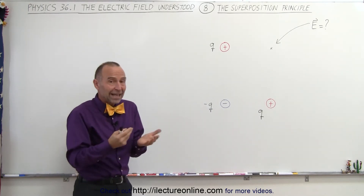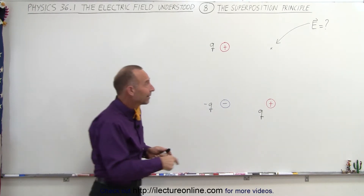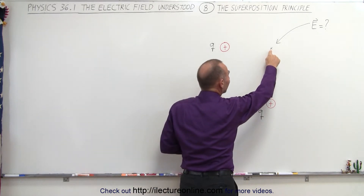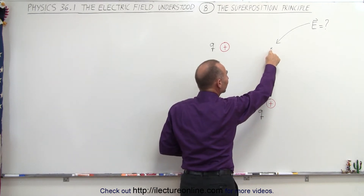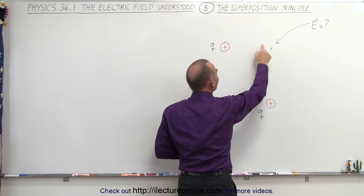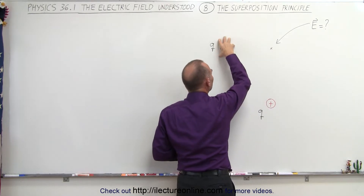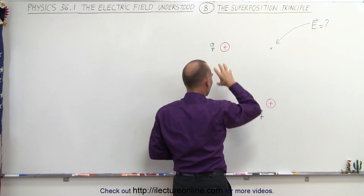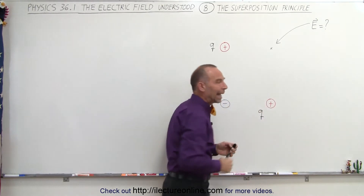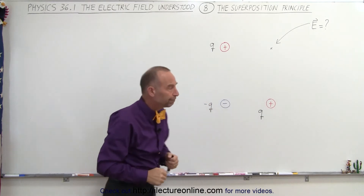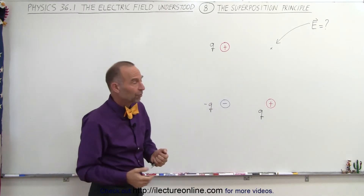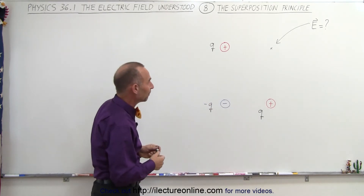The superposition principle states that the electric field at this location is simply a vector sum of the electric field created by this charge, by this charge, and by this charge, all added together. So let's go ahead and illustrate that, and then later on we'll see some examples of that.